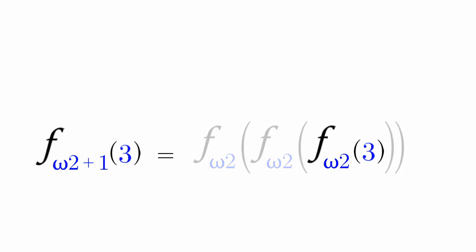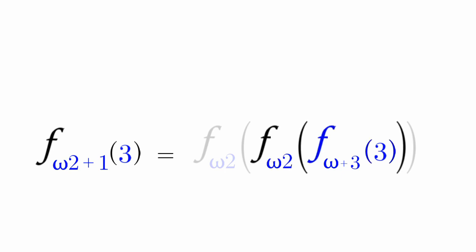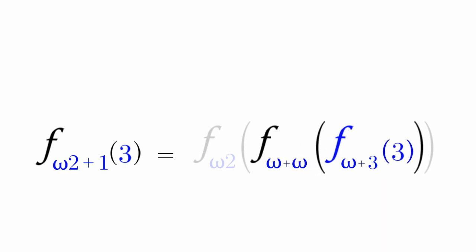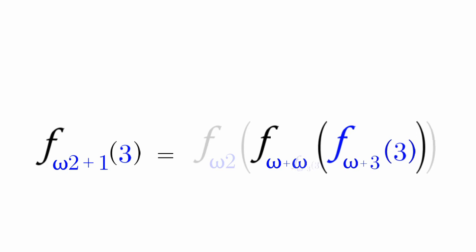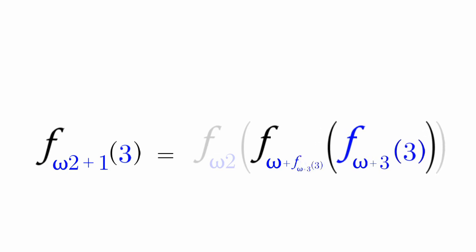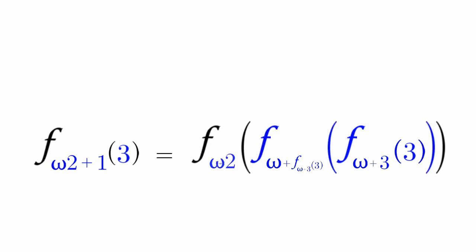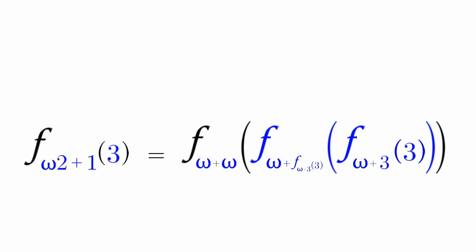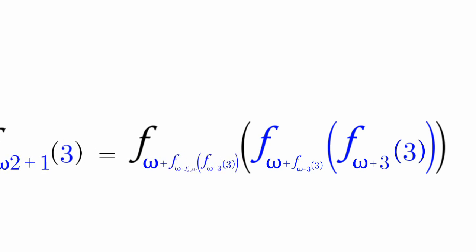F(omega×2) of 3: you break it down into omega plus omega, then turn the closest omega into a 3. F(omega×2) of F(omega+3)(3): you break omega times 2 into omega plus omega, then diagonalize it to F(omega+3)(3). F(omega×2) of this massive number: we break omega times 2 into omega plus omega, then diagonalize once again.